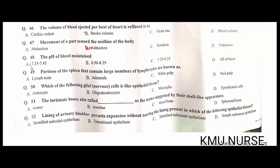The pH of blood is maintained between 7.35 and 7.45. A is the correct option. The portion of the spleen that contains a large number of lymphocytes is known as white pulp. C is the correct option. Which of the following glial cells is like an epithelial cell? Ependymal cell. D is the correct option.